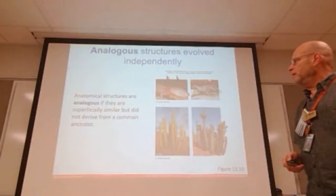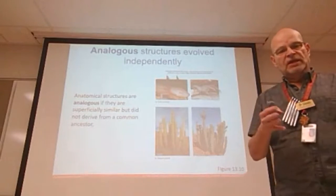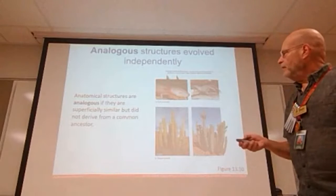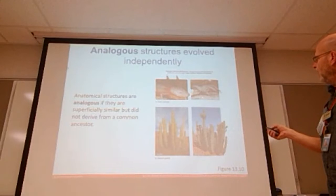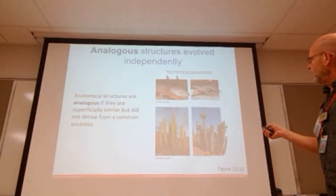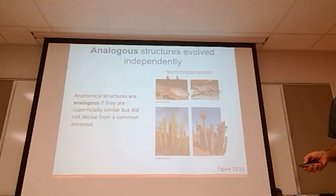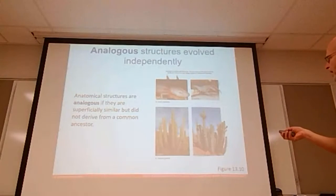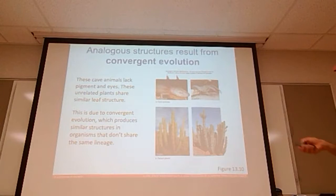We talked about analogous structures last time — things that have a superficial appearance but come from a different evolutionary line. The examples used were the gills on this cave salamander and the gills on the cave crayfish, and these two different cactus species which are not very closely related but have a very superficial appearance. Cave animals lack pigment and eyes, but those traits come from a different lineage.